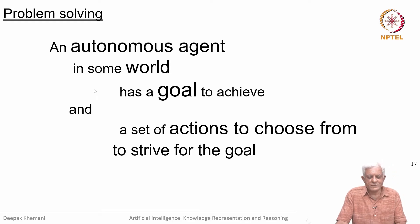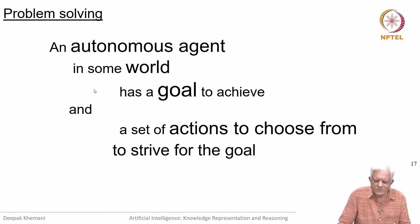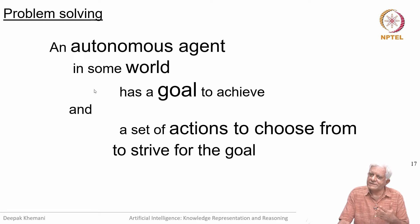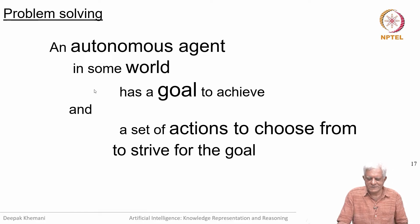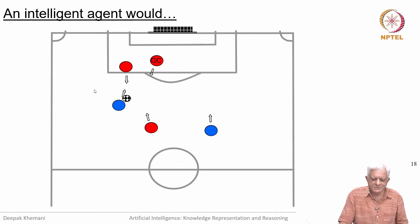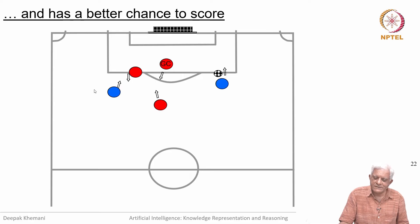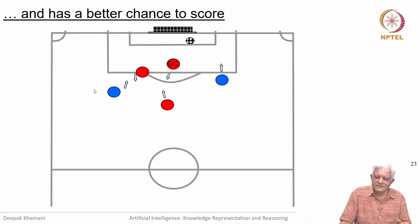That is what we are talking about — autonomous agents in some world or domain have a goal to achieve, meaning an objective, and a set of actions to choose from to strive for that goal. An agent must be very aware of what is happening. It must have a representation of its domain, a representation of what other agents are doing, and access to strategies and plans used in this situation. Based on all that, you take a decision — you would possibly pass the ball not towards the goal but to a different region where your teammate is heading, giving them a better chance at scoring.